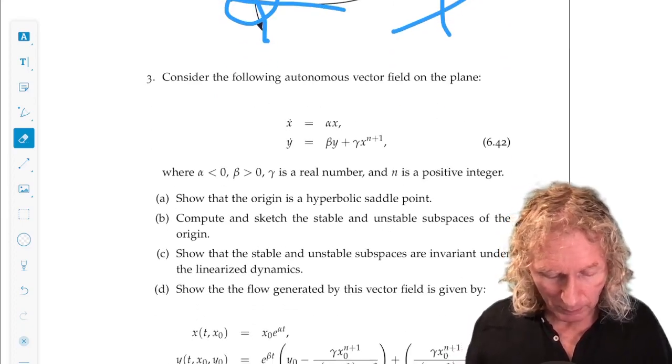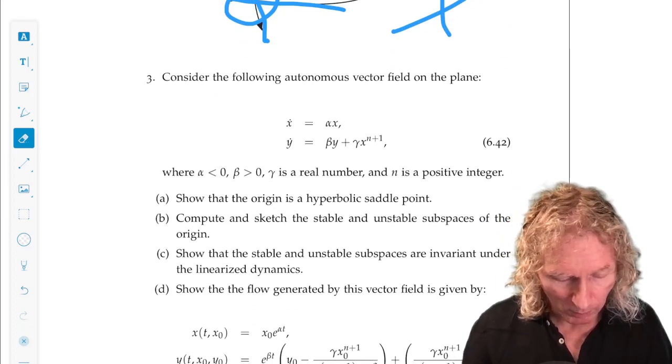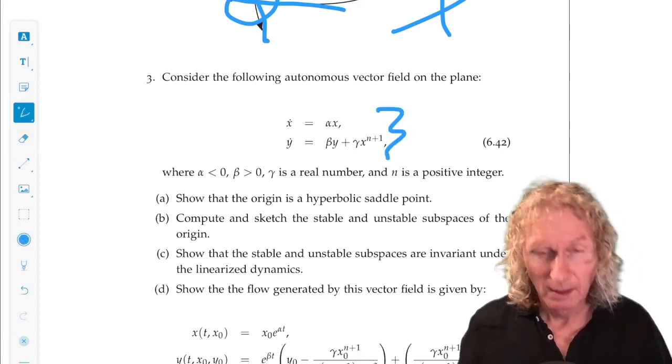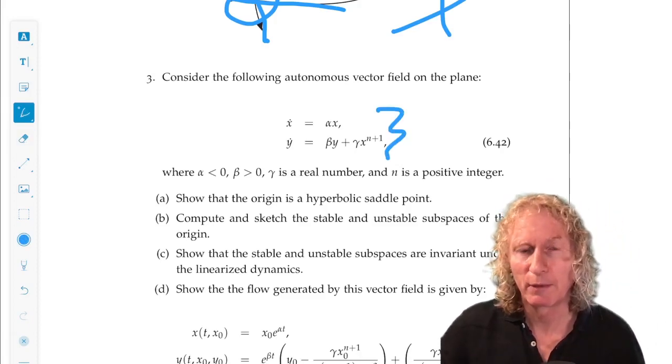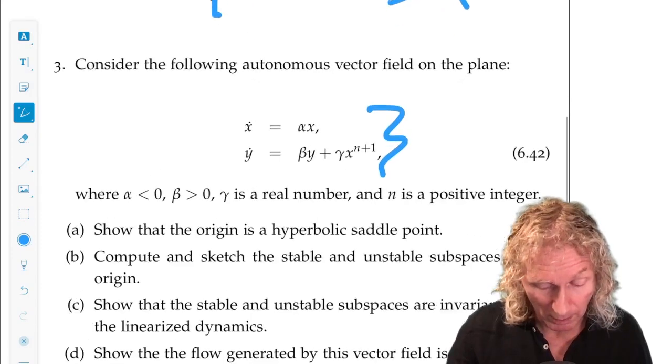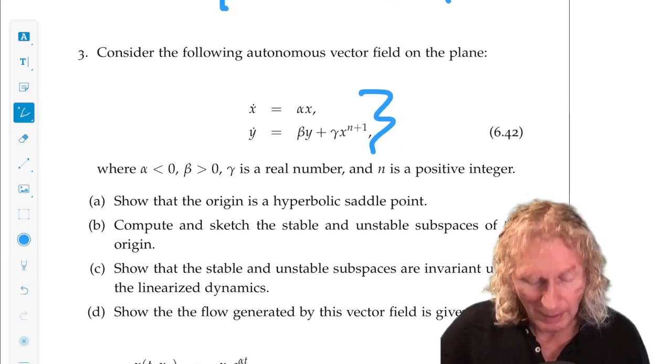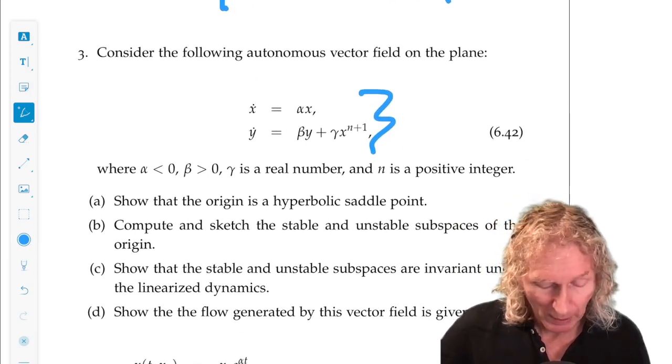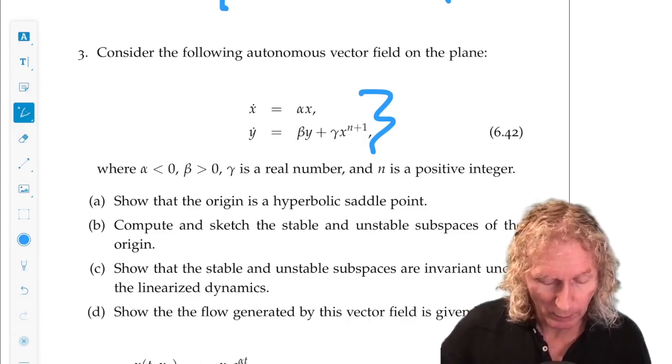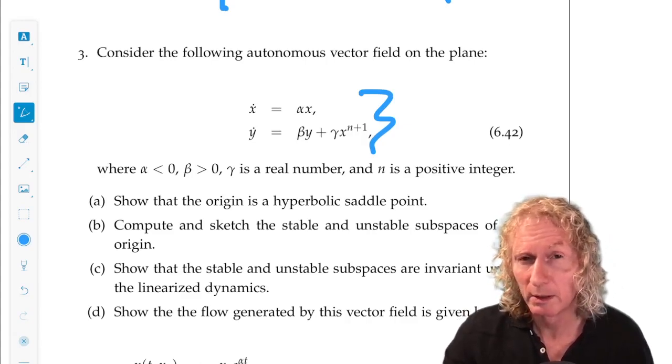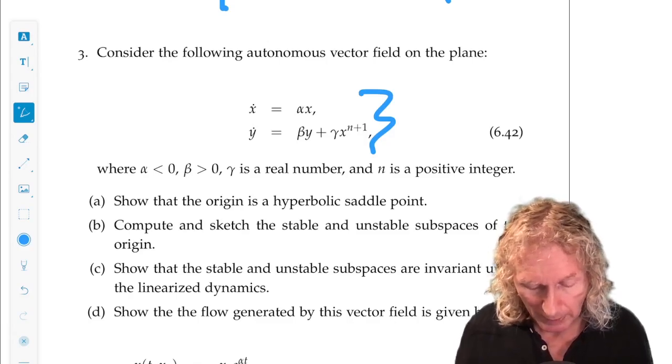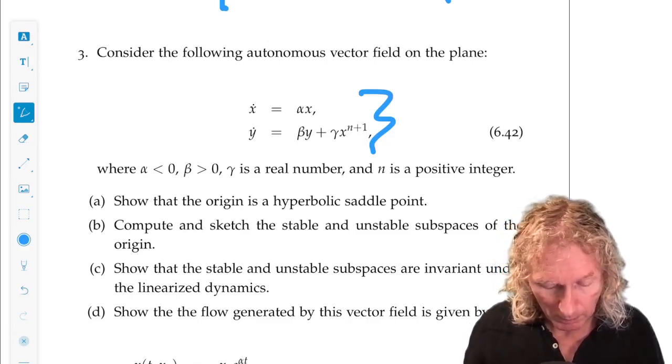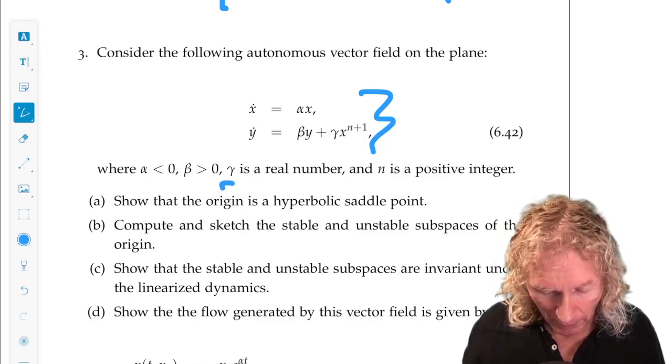Alright, now this, problem 3, this example, this is a modification of my favorite example. I've modified it in a lot of ways. This is 1, alpha and beta parameters. Alpha less than 0, beta greater than 0. So, the origin is a hyperbolic equilibrium point. Gamma is a real number. And n is a positive integer.